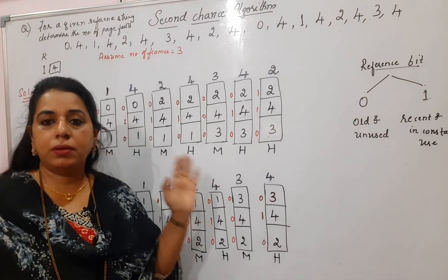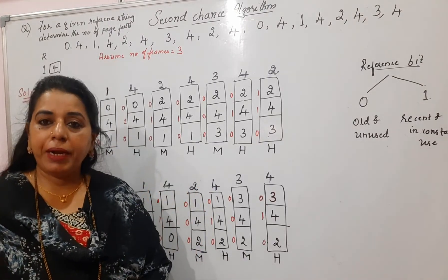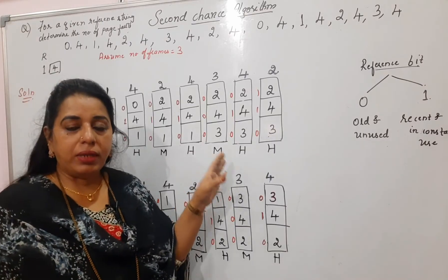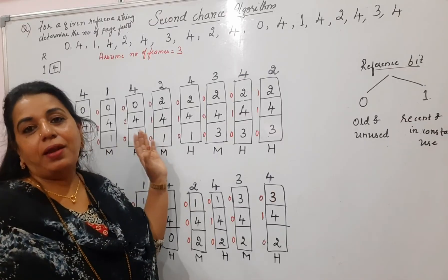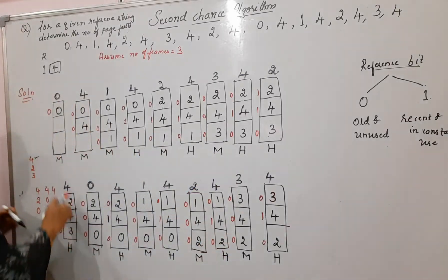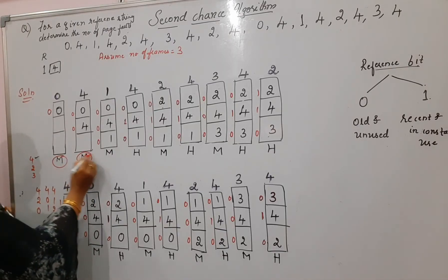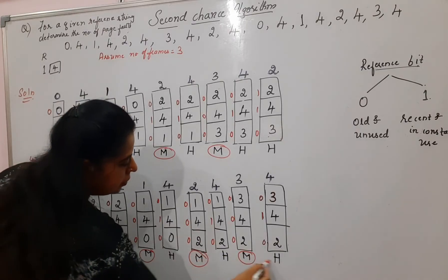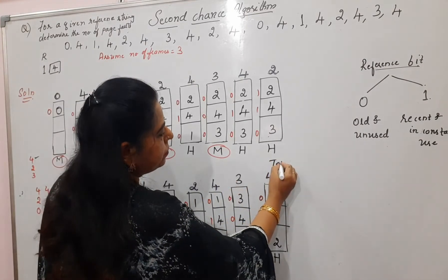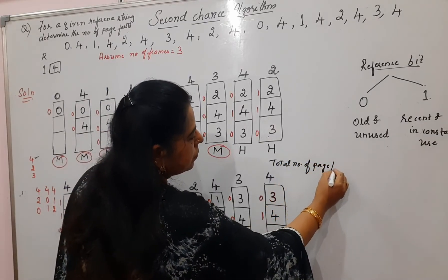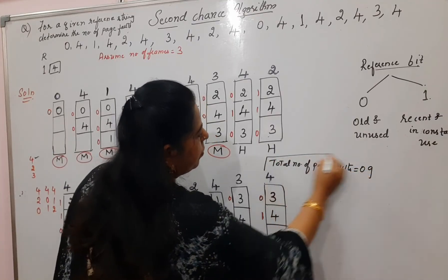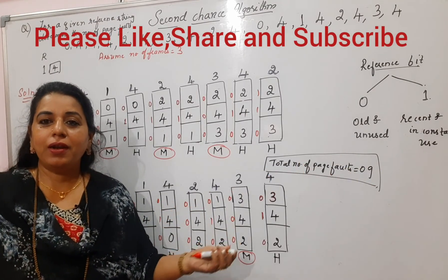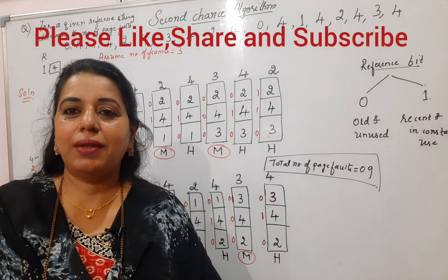You need to be careful with Second Chance since reference bits continuously change from zero to one and back, and one wrong step will cause all subsequent steps to be wrong. Count all the misses: there are nine total. Total number of page faults equals nine. This is how you solve problems using the Second Chance page replacement algorithm. Hope this session is useful — please like, share, and subscribe. Thank you, bye-bye, take care.